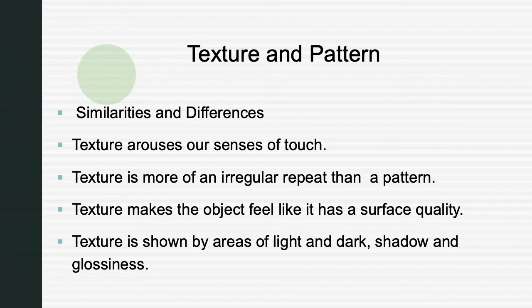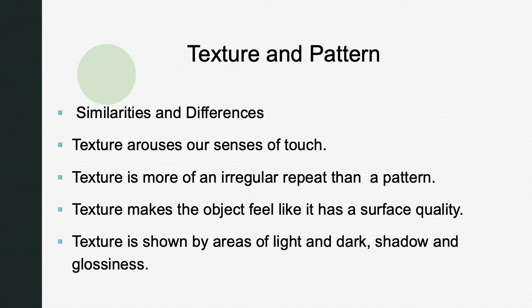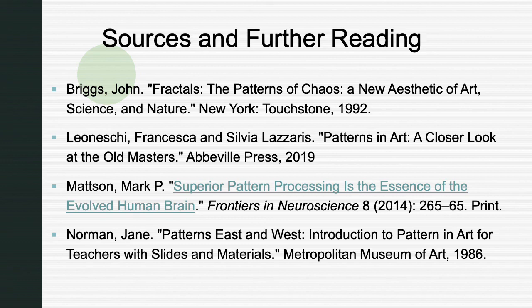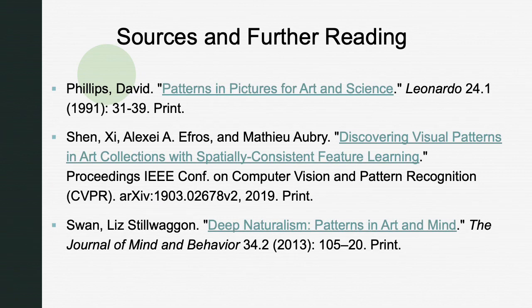What is the relation between texture and pattern? There are many similarities and differences between them. Texture arouses our senses of touch, whereas pattern does not. Texture is more of an irregular repeat than a pattern; pattern is mostly a regular repetition. Texture makes an object feel like it has a surface quality, but pattern has no surface quality. Texture is shown by areas of light and dark shadow and glossiness, while pattern can be in any medium — matte or glossy, shiny or dull. These are the sources for further reading; you are requested to please go ahead and read more for your best understanding and knowledge. Thank you for listening.